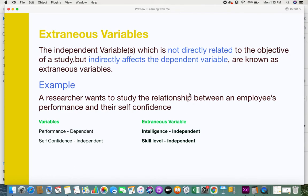A researcher wants to study the relationship between an employee's performance and their self-confidence. If you understand, you have two variables: the employee's performance, which is dependent, and self-confidence, which is an independent variable. But later on, the researcher comes to understand that there are various other extraneous variables.